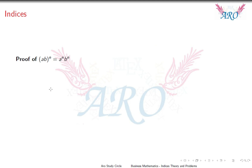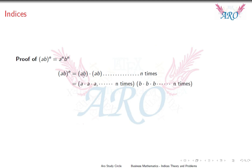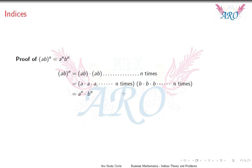Last result: AB whole power N equals A power N into B power N. Proof: AB whole power N can be written as AB · AB and so on N times. Splitting this, we get A · A and so on N times, multiplied by B · B and so on N times, which equals A power N into B power N. Those are the properties, or laws, of indices.